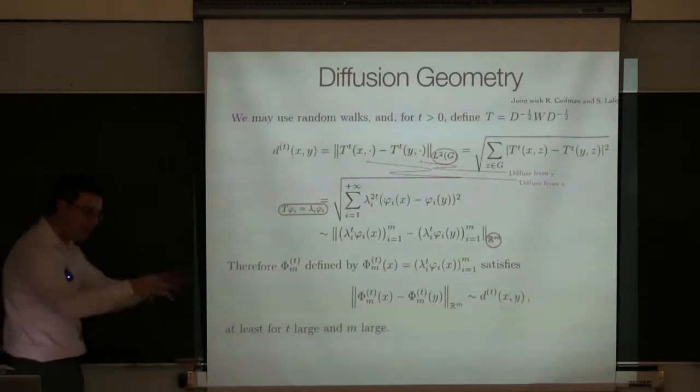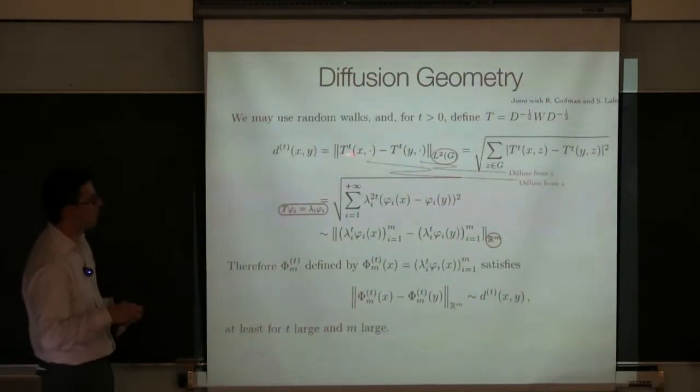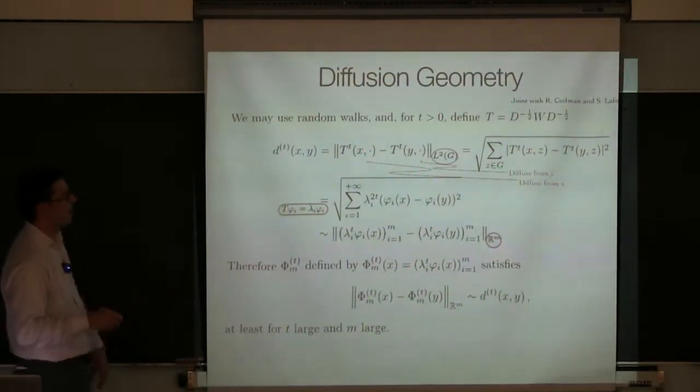And you can compare those two distributions. If they are close, there were many paths of length t that allow you to go from x and y. If these two distributions are very far, it was hard to go from x and y in t steps.